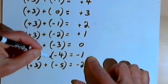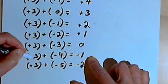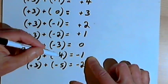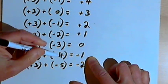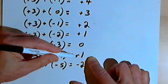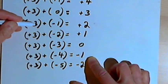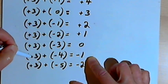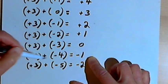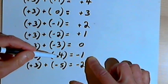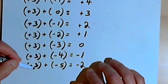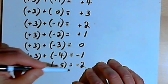Going further, we have positive 3 plus negative 4. I've got two different signs, so I find the number with the larger absolute value — that's the 4 — and use the sign it had, which was negative. So my answer is going to be negative, and I take the difference of the absolute values. I get negative 1 for this one. For the next, positive 3 plus negative 5, I get negative again — negative 2.